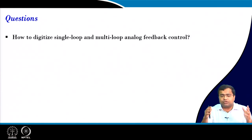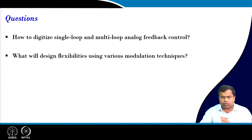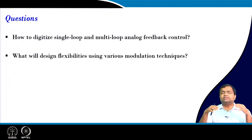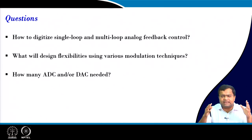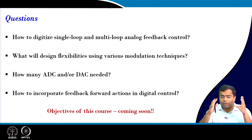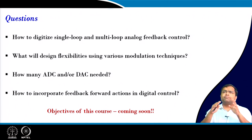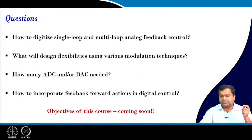The question now is: when you go to digital control, how do you digitize this single loop and multi-loop control that we have recapitulated in the analog context? These are the questions we will be addressing throughout the course. What design flexibility will the various modulation techniques offer? How many ADCs and DACs will be needed to realize digital control? How do you incorporate feed forward action in digital control? These are the objectives of this course and will lead to various digital control architecture developments — even for peak current mode control there can be three or four types of architecture for digital implementation.